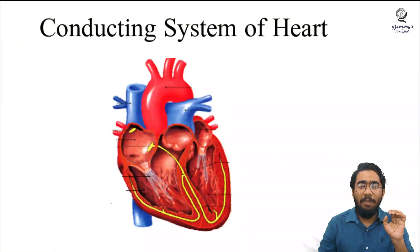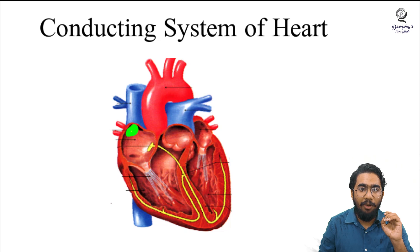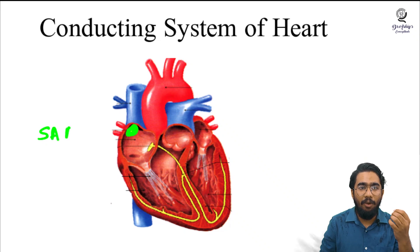The first part of the nodal tissue is located in the right upper part of the right atrium. This part is known as the sinoatrial node, or in short, the SA node.